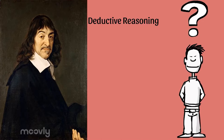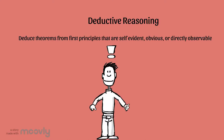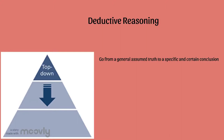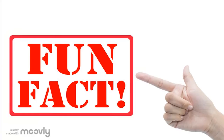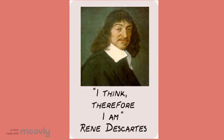Deductive reasoning is more of a top-down approach, because we go from a general assumed truth to a specific and certain conclusion. And here's a fun fact: the first principle that Descartes felt was self-evident was summarized in the popular statement, "I think, therefore I am."